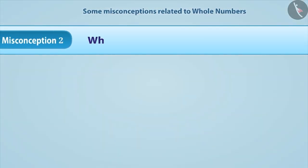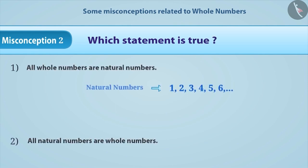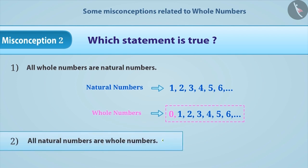Misconception 2: Which of the following statement is true? The collection of natural numbers along with 0 forms the collection of whole numbers. That means all natural numbers are whole numbers as well.